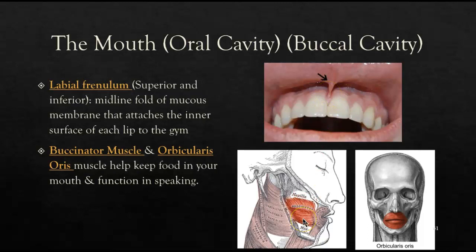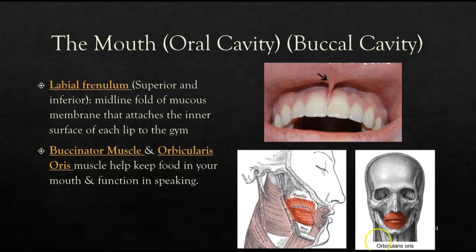Looking at the musculature within this area, we see the buccinator muscle, which helps with the sucking motion and is heavily used when playing a wind instrument. We also have the orbicularis oris, a circular muscle surrounding the lips that allows puckering. These muscles work together to help with speaking and keeping food within the mouth.